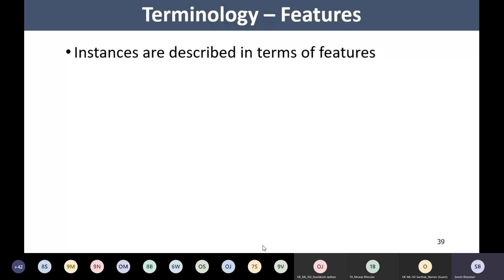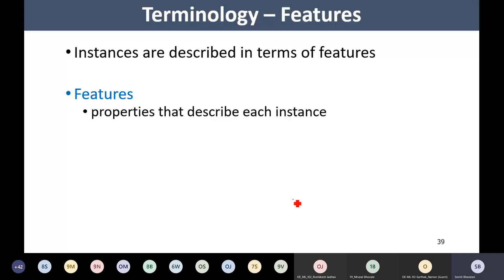The next concept we are discussing is features. When solving any machine learning problem we need some data related to the instances, examples, objects, or samples we are working with. To describe any instance, we make use of features. Features are the properties that describe each instance.